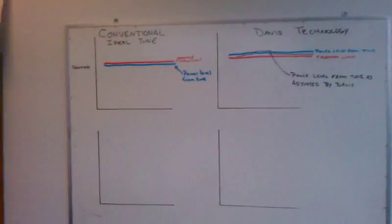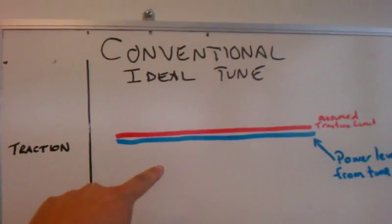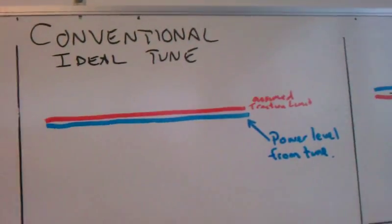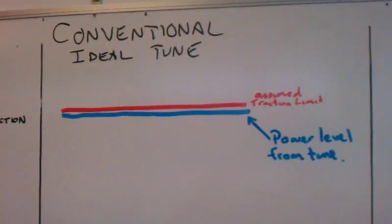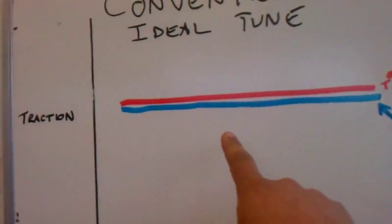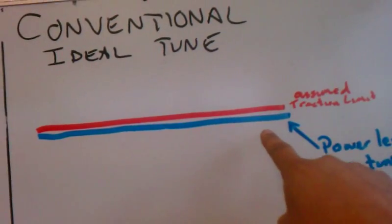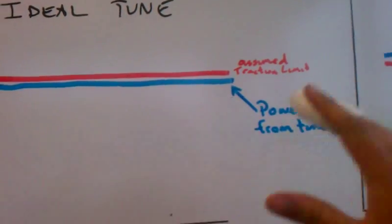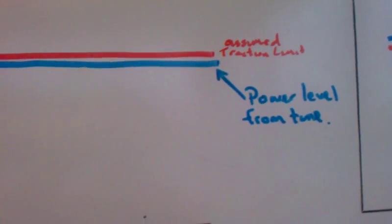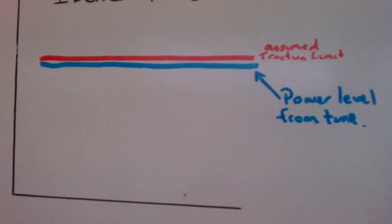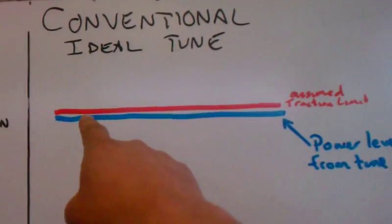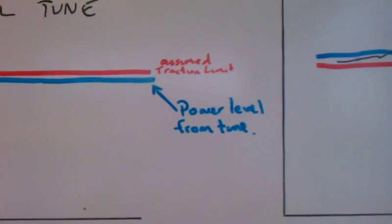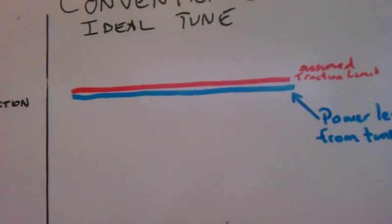So anyway, went to my whiteboard and drew a couple of graphs. The red line here represents your assumed traction limit when you're tuning a vehicle. That's basically what the track will hold. As a tuner we put power in. I don't care what kind of power adder you use, but however you tune your vehicle, you tune it to be under that level of assumed traction limitation.